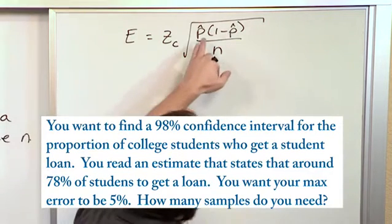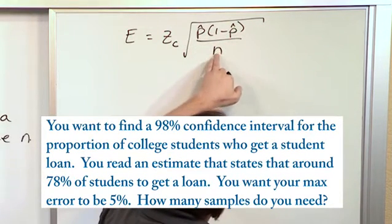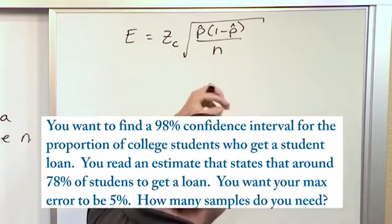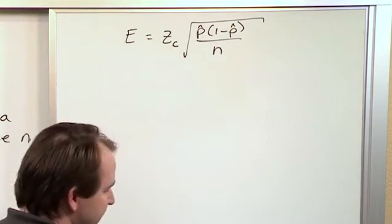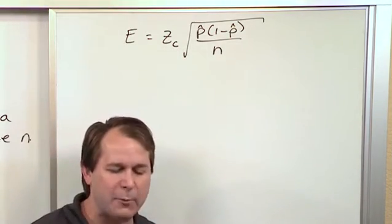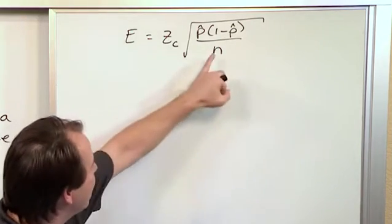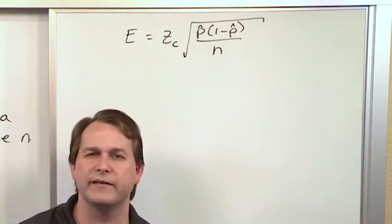Alright, so this is the sample proportion, this is the number of samples, and this is the critical value here. But what we're actually asked is, we're trying to find out how many samples do I need? That's the number n, how many samples, that's the number n.